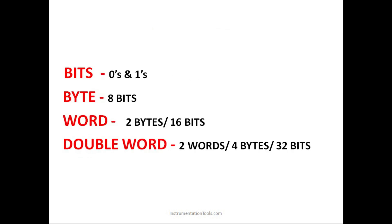Before moving further, we should know some basic terminologies about how data is stored inside the memory. Bits are zeros and ones. A byte is a combination of eight bits. A word is a combination of two bytes, or 16 bits. A double word is a combination of two words, four bytes, or 32 bits.